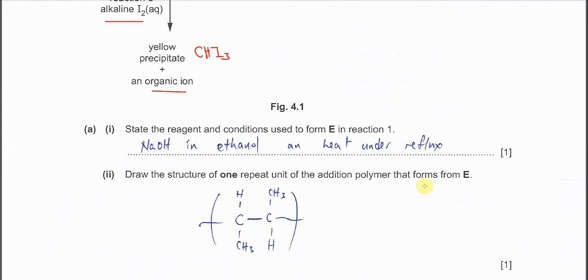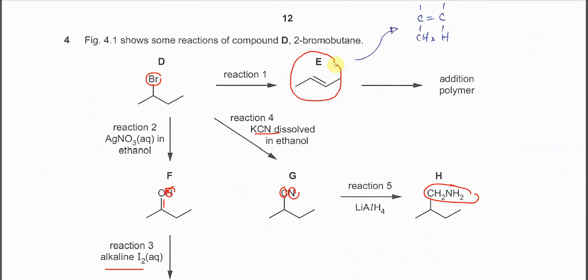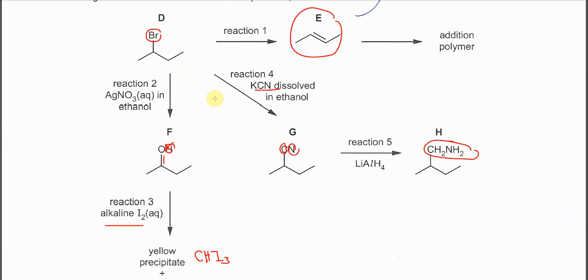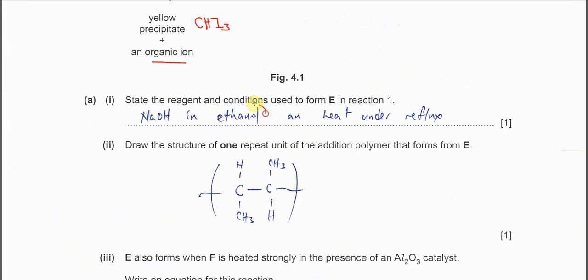Okay let's go through one by one. Part A, state the reagent and condition used to form E in reaction 1. So in order for this 2-bromobutane to undergo elimination, very easy because it's haloalkane and it undergoes elimination. It must be sodium hydroxide in ethanol. This is the reagent and of course it must be the condition is heat under reflux.